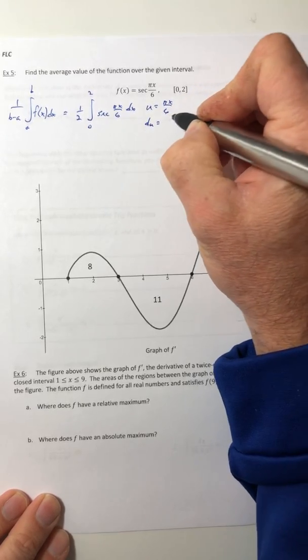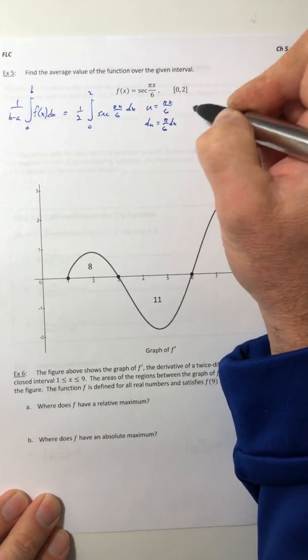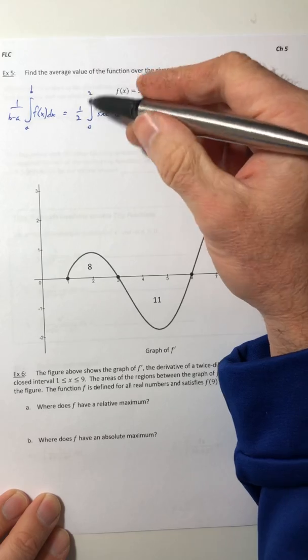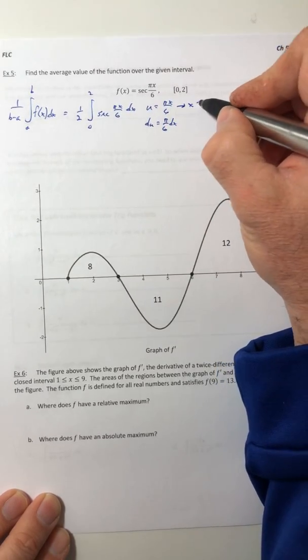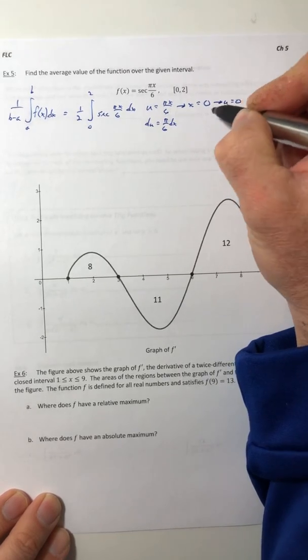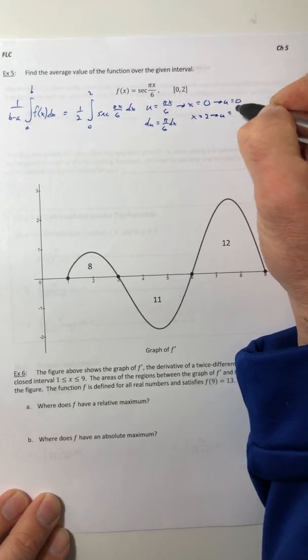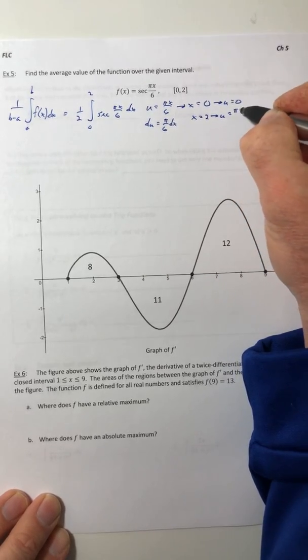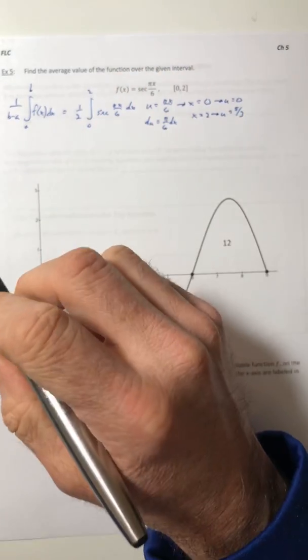This is going to require a u-substitution. So u would equal pi x over 6 and du would be pi over 6 dx. I also have some bounds so let's go ahead and switch those out. When x is 0, u is 0, and when x is 2, u is pi over 3.